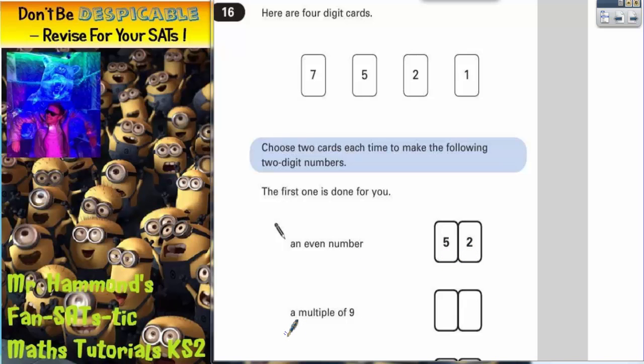The first one we've actually got to do ourselves is a multiple of 9. Well multiples of 9 are the 9 times table. So it might be an idea to think about what the 9 times table is.